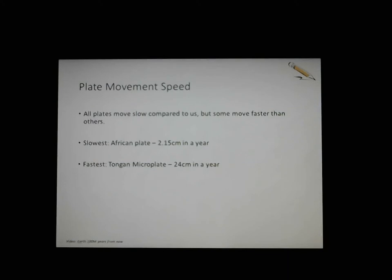These plates move slowly compared to us — you could easily outrun, outwalk, or outcrawl them. The African plate moves about two centimeters per year. The Tonga microplate is the fastest at about 24 centimeters per year, so you could take one meter step and the plate would catch up to you in about four years. Australia moves northeast at about six centimeters per year.